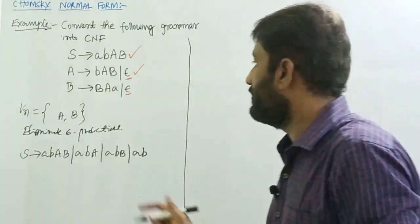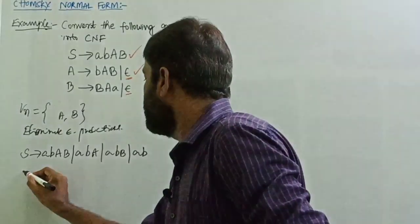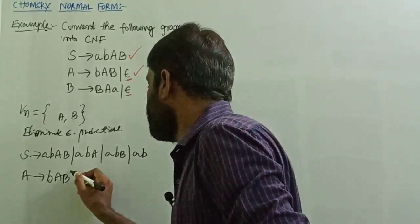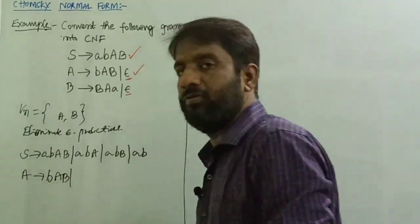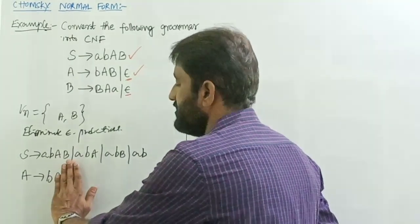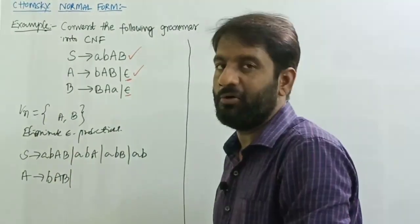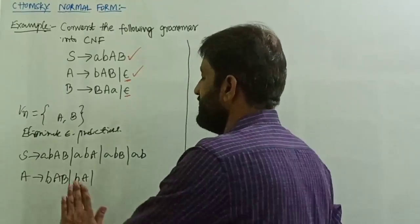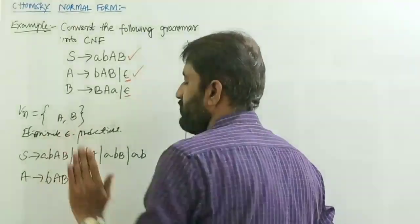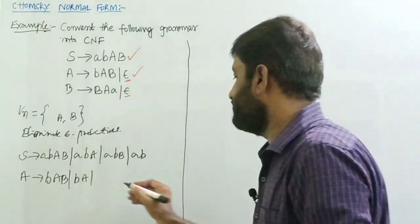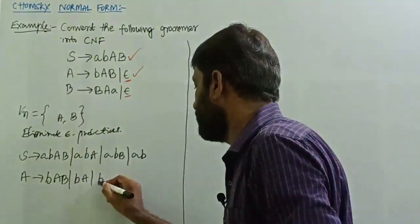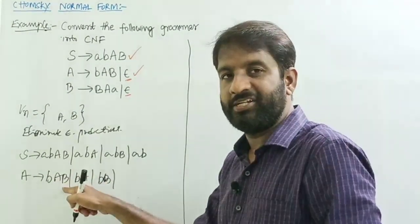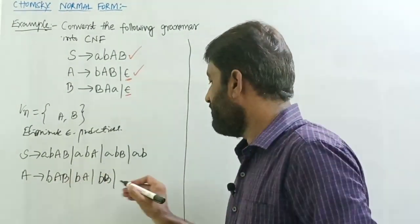Take the next production: A tends to BAB. If I replace B with epsilon, what remains is A only. If I replace A with epsilon, what remains is B. If I replace both A and B with epsilon at the same time, what remains is B only.